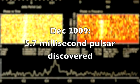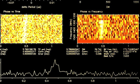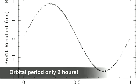In 2009 a 5.7 millisecond pulsar was discovered on our supercomputers and our colleagues at Jodrell Bank soon realized that this star was orbiting another object every two hours.